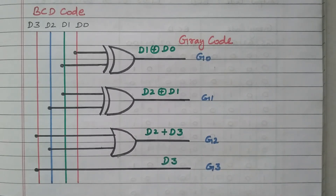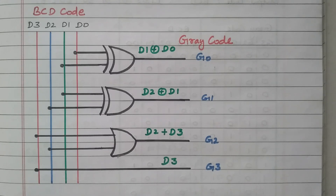In this video, we discussed how to convert BCD code into gray code, the logic used, and how to develop the truth table. From the truth table, using the K-map, a simplified Boolean expression is obtained, and that Boolean expression is implemented with logic gates. Subscribe the channel for more videos and notifications. Soft copy of this material is available in the drive; the link is given in the description box. Thank you for listening.